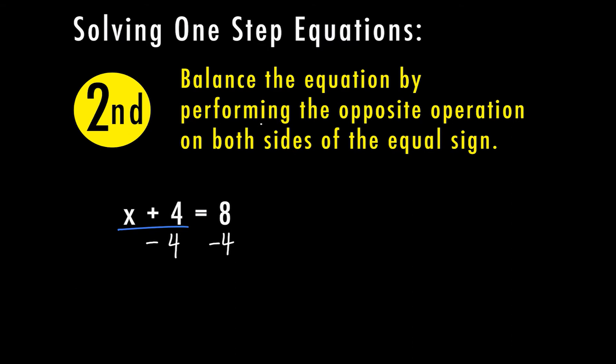Let's look at our second example. On the same side as the variable, I had x minus 3. The opposite operation of minus 3 is plus 3. So I'm going to add 3 to both sides. Whatever you do to one side, you always have to do to the other side.